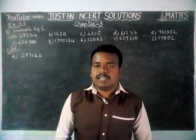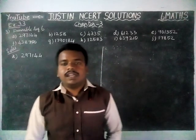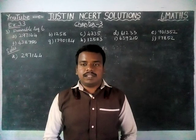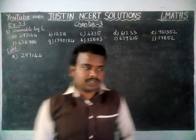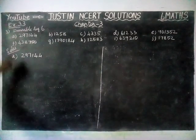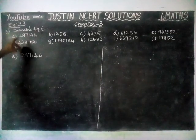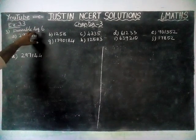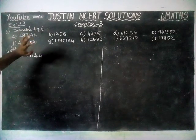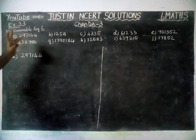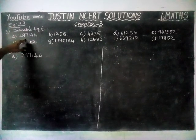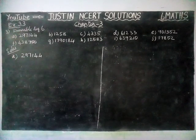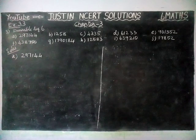Hi students, welcome to Justine NCRT Solutions. In this video, we are going to see Class 6 Maths, Chapter 3, Exercise 3.3, Third Posting. We are going to check that given numbers are divisible by 6. To check that a number is divisible by 6, we have to check it is divisible by 2 and divisible by 3. If that number is divisible by both 2 and 3, that number is divisible by 6. That is the divisibility rule.